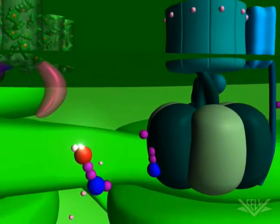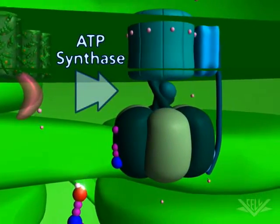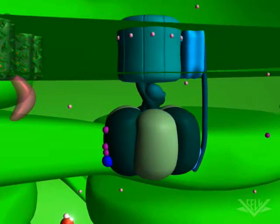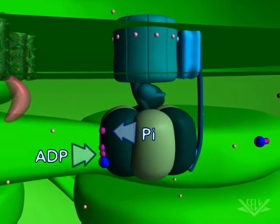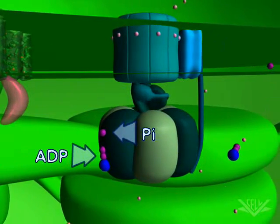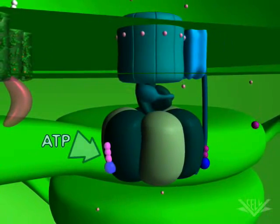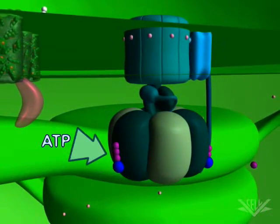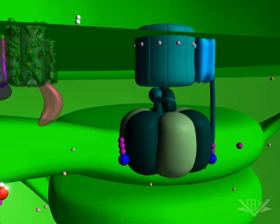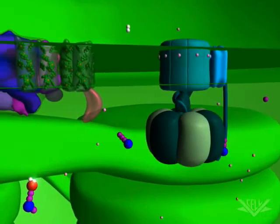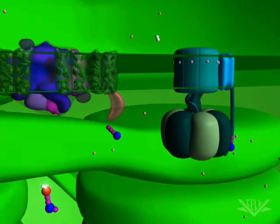The gradient created by the electron transport chain is utilized by ATP synthase to create ATP from ADP and PI. This is similar to the way ATP is synthesized in the mitochondria. ATP, NADPH, and molecular oxygen are the final, vital products of photosynthesis.